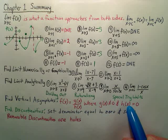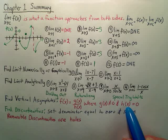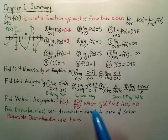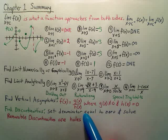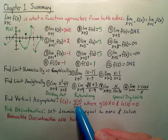So you just basically set the bottom equal to 0. Once you do that and solve it, those values where you set the bottom equal to 0, if when you plug them back in and you get a non-zero over 0, if you plug those values in and get a non-zero over 0, those are vertical asymptotes.